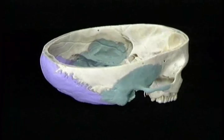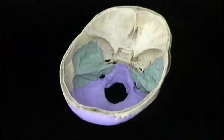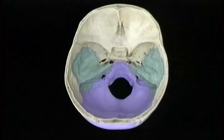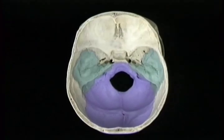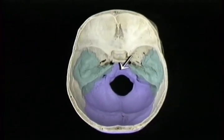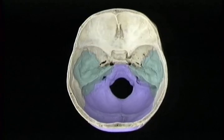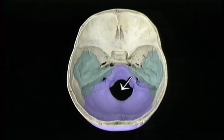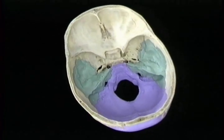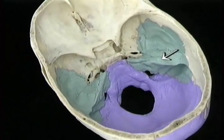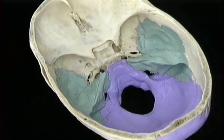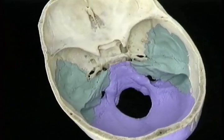Let's take a brief look at the occipital and temporal bones from the inside. Here's the squamous part of the occipital bone. Here's the basilar part. Here's the foramen magnum. Here's the squamous part of the temporal bone. Here's the petrous part, which contains the structures of the inner and middle ear.